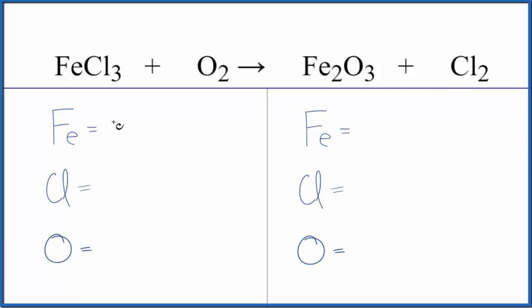Let's count the atoms up and balance the equation. One iron, three chlorines, and two oxygen atoms.